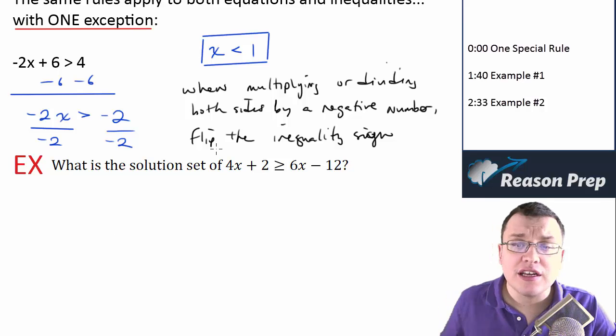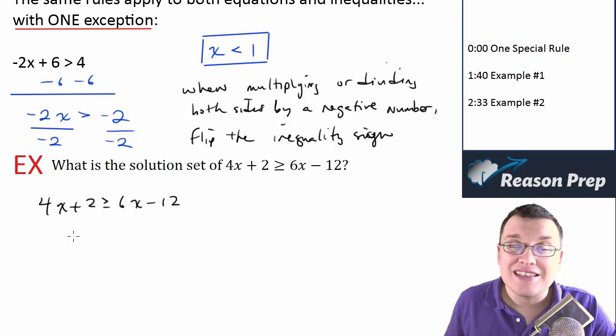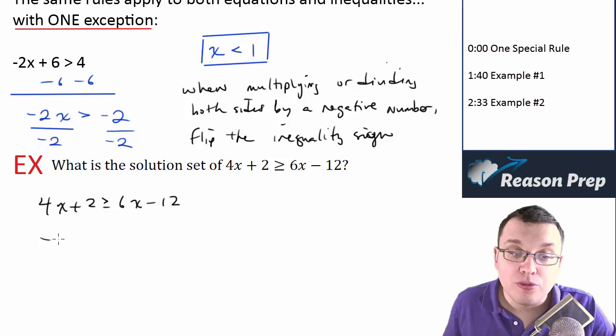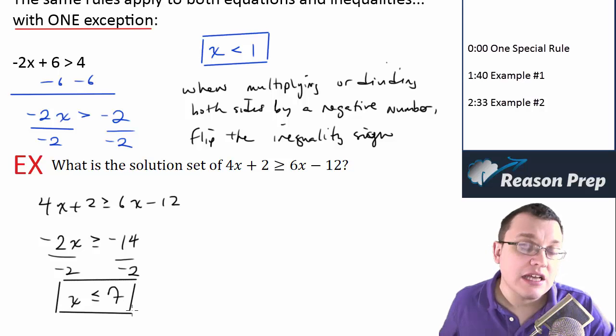So what is the solution set of this? So we'll go ahead and write down 4x + 2 is greater than or equal to 6x - 12. So I'm going to subtract 6x from both sides, subtract 2 from both sides. I'll get -2x is greater than or equal to -14. And remember, dividing both sides by negative 2, I've got to flip the sign. So the answer is x is less than or equal to 7.